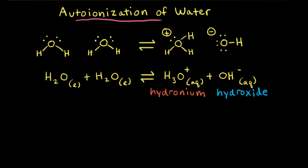The autoionization of water refers to the reaction of water molecules to form two ions: the hydronium ion, H3O+, and the hydroxide ion, OH-. Water can function as an acid or a base. In this reaction, one water molecule functions as a Brønsted-Lowry acid and donates a proton, and another water molecule functions as a Brønsted-Lowry base and accepts a proton.